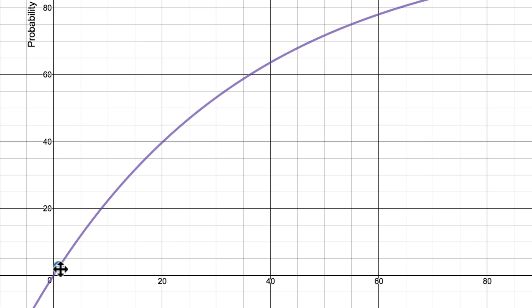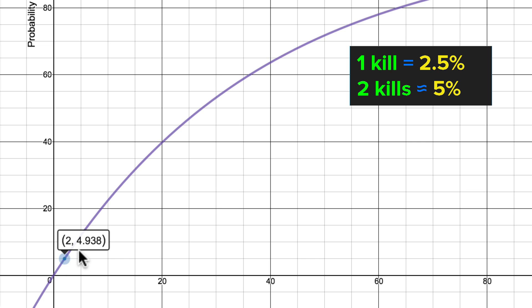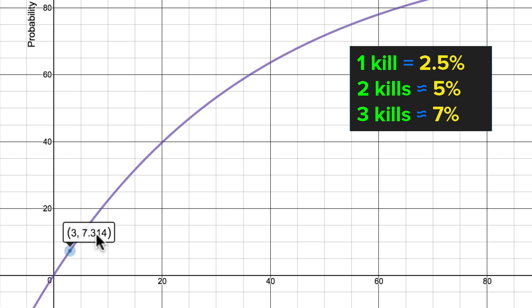As you can see, if we kill 1 Skeleton, there is a 2.5% chance that we will get a skull. We already know that from the drop rate. But if we kill 2 Skeletons, there is about a 5% chance that we will have a skull by then. If we kill 3, there is about a 7% chance.